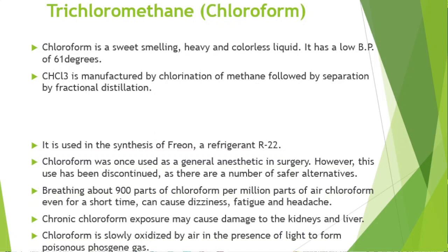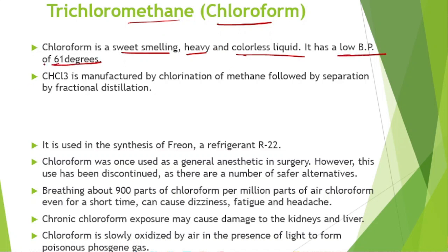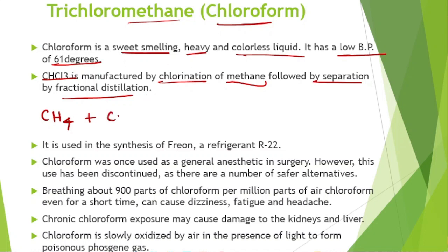Next is trichloromethane, also known as chloroform. Chloroform is a sweet-smelling, heavy, colorless liquid with a low boiling point of 61°C. CHCl₃ is manufactured by the chlorination of methane (CH₄) with Cl₂ in the presence of hν, followed by separation by fractional distillation, with the liberation of HCl.